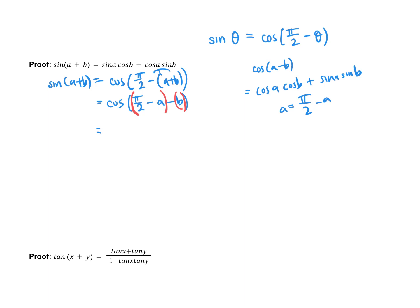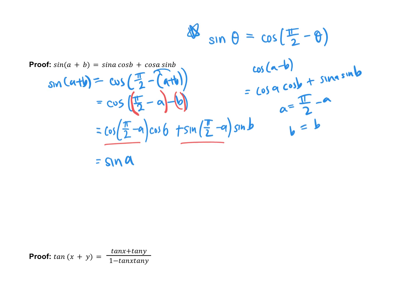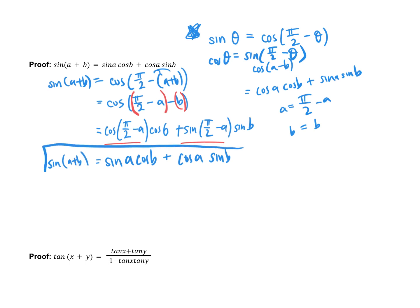Now we have two more co-related identities to apply. cos(π/2 − A) = sinA, and sin(π/2 − A) = cosA — because if sinθ = cos(π/2 − θ), then cosθ = sin(π/2 − θ). Substituting: sinA·cosB + cosA·sinB. And there's our compound angle formula for sine: sin(A + B) = sinA·cosB + cosA·sinB.